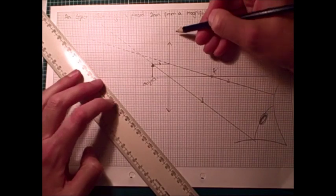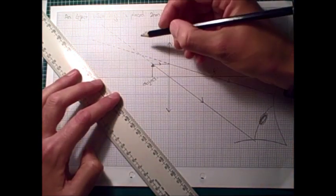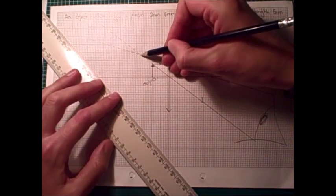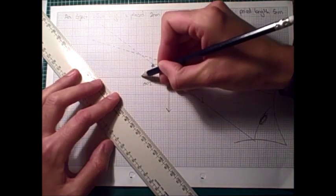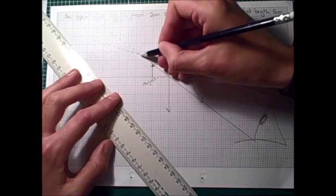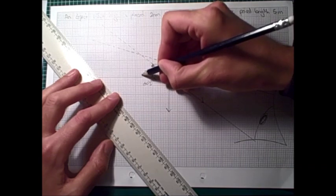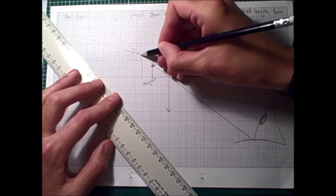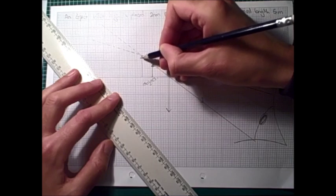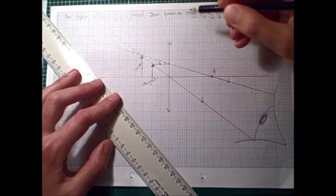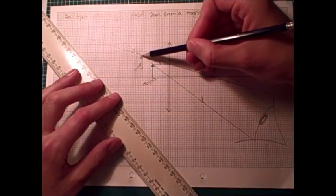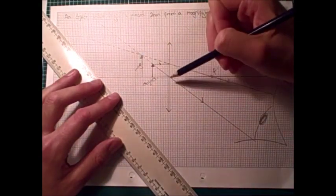And then we can see our image forms where these virtual rays cross. So, then we can draw in... Really, perhaps I should use a ruler for this. We should draw in our image forming here. And we can see that the image is upright. It's the correct way up.